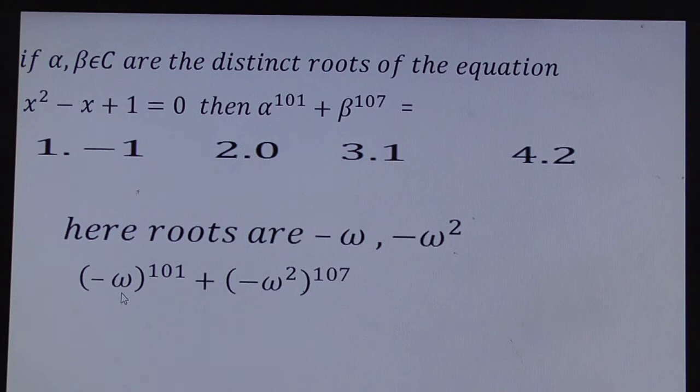Here you can write this as ω^99 × ω². 99 is a multiple of 3. Here 2 × 107 = 214, so you can write it as ω^213 × ω. So clearly the multiples of 3 get 1.